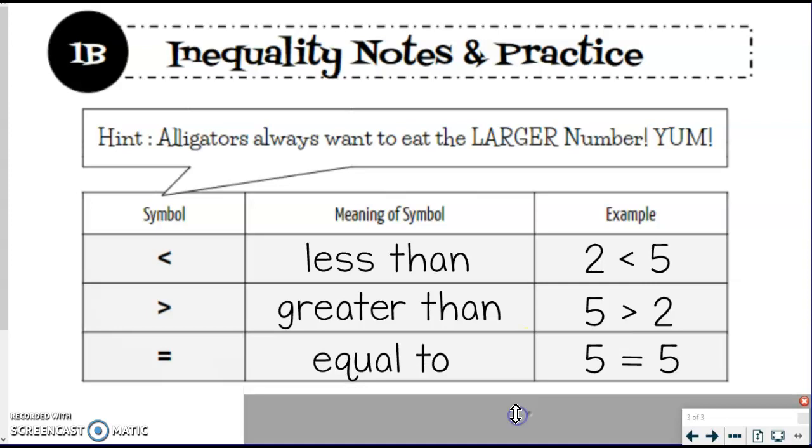And then the last one you know is equal to, so saying like 5 is equal to 5.